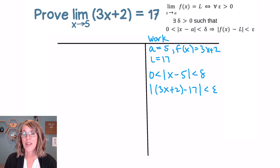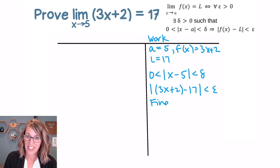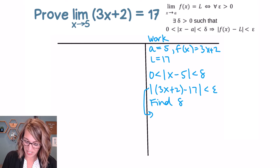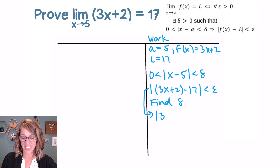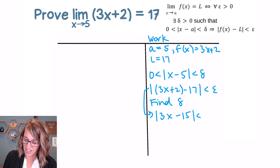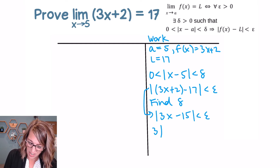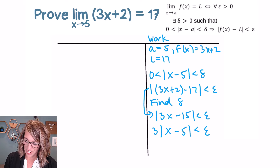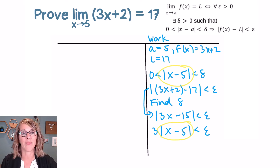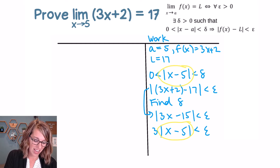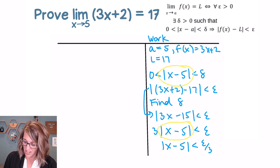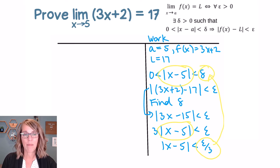Now I want to work backwards to find 'there exists a delta' — I'm going to find delta in terms of epsilon by working through my epsilon statement. I get |3x + 2 minus 17|, which is |3x minus 15|, less than epsilon. I can factor out a 3: |3(x minus 5)| less than epsilon. Dividing both sides by 3, I get |x minus 5| less than epsilon thirds. So epsilon thirds can be our delta.